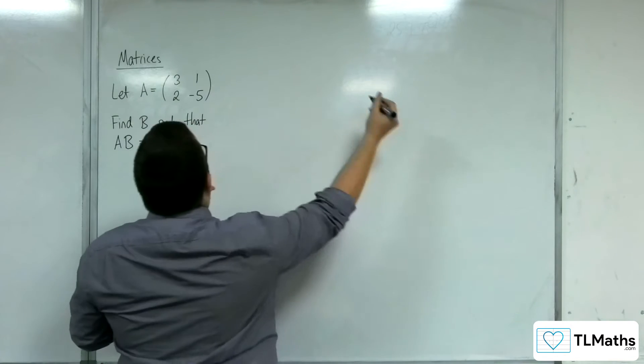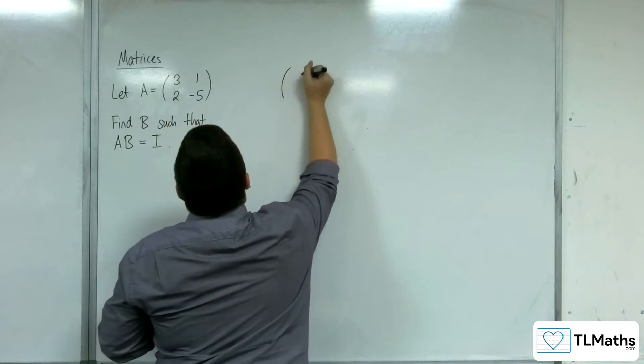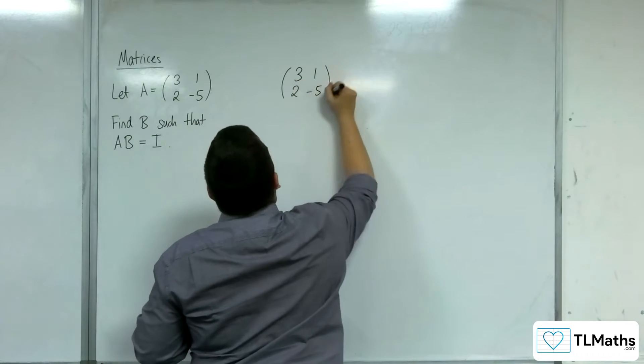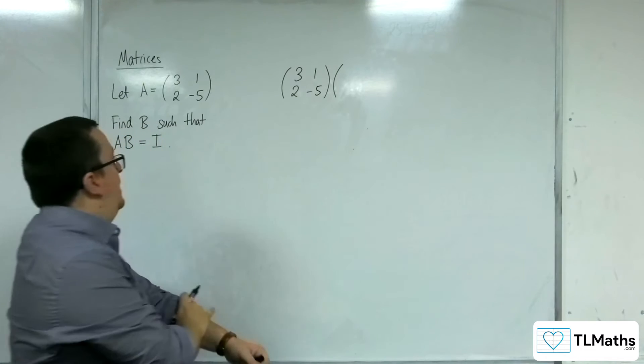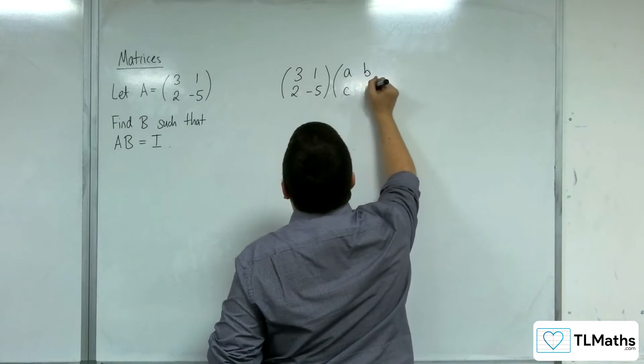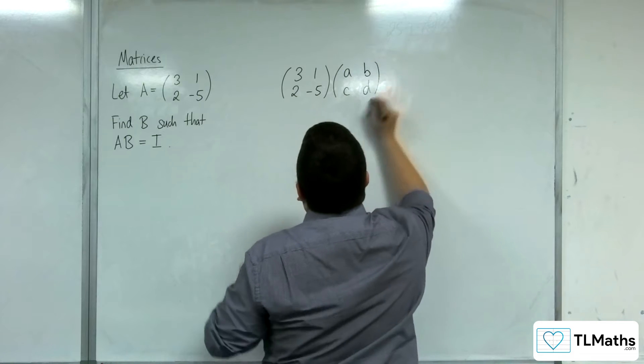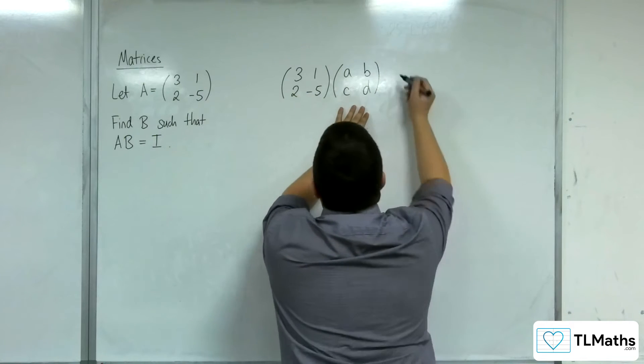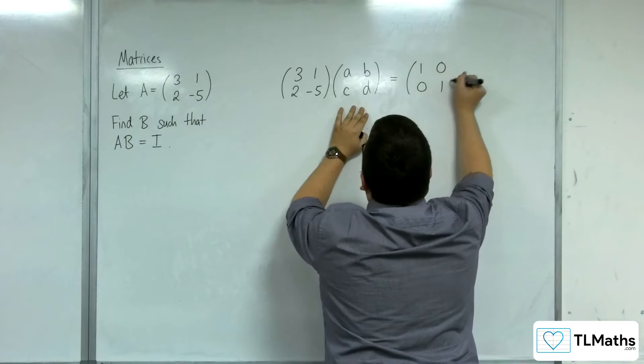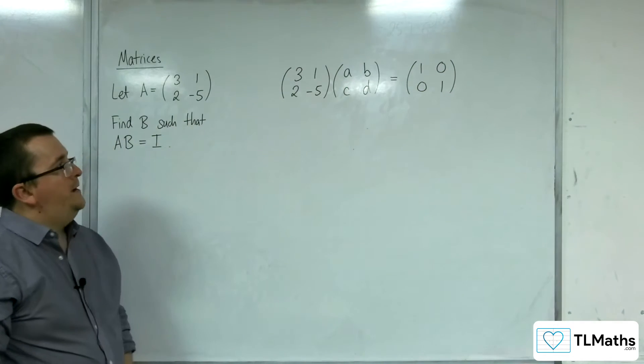So our initial reaction to this should be, well, I can write down a general matrix for B. We could write it down as A, B, C, D. So I know that when I multiply these two together, I need to get the identity matrix 1, 0, 0, 1.